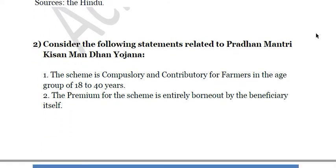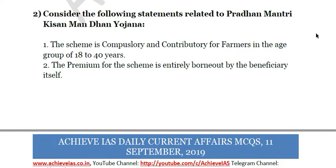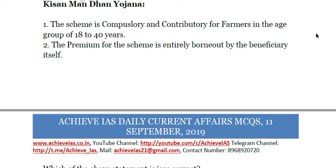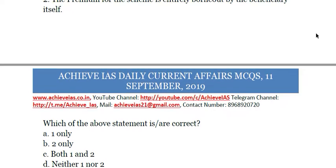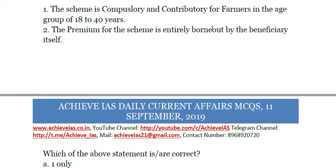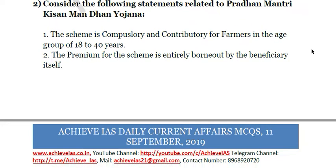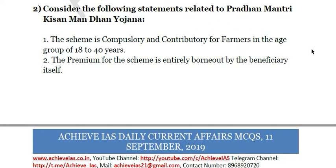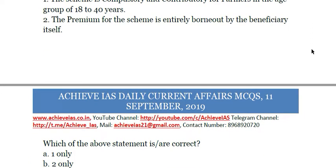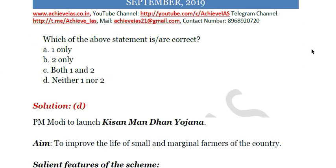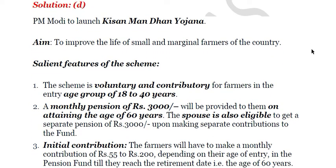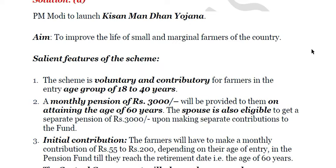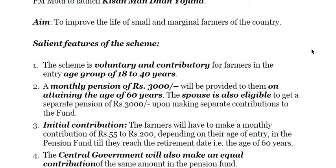The second question: consider the following statements related to Pradhan Mantri Kisan Mandhan Yojana. First, the scheme is compulsory and contributory for farmers in the age group of 18 to 40 years. Second, the premium for the scheme is entirely borne by the beneficiary itself. Both of the above statements are incorrect, so the answer is D — neither one nor two. This is a scheme to improve the life of small and marginal farmers. It is voluntary and contributory, not compulsory, for farmers in the entry age group of 18 to 40.